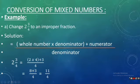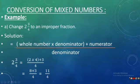The example is 2 whole 3 by 4. Now according to this rule, first we multiply the whole number with the denominator. The whole number is 2, so we multiply 2 with 4. Then bracket, then plus, and the numerator — the numerator is 3 — so we write 3, then the whole divided by the denominator.